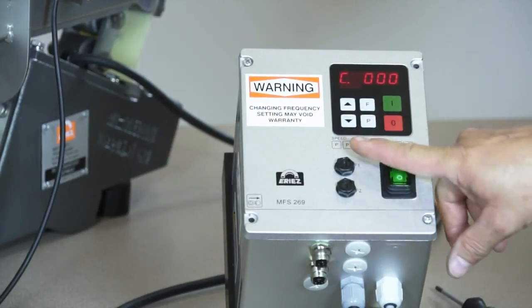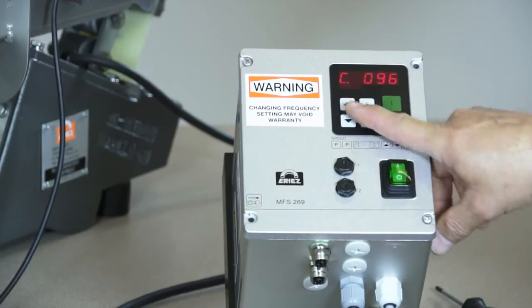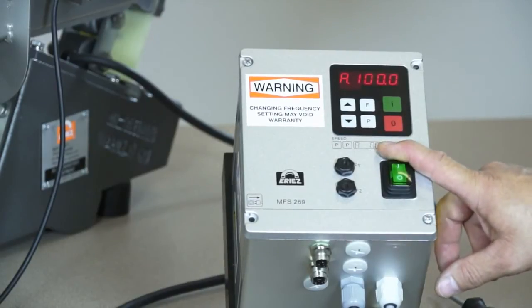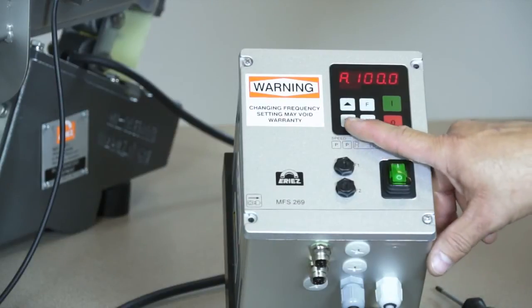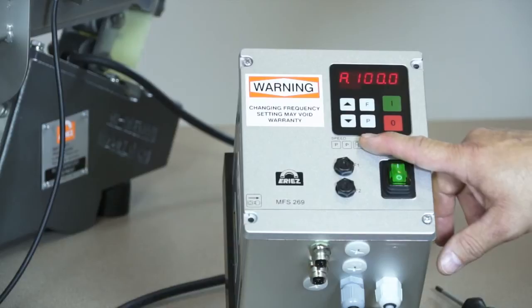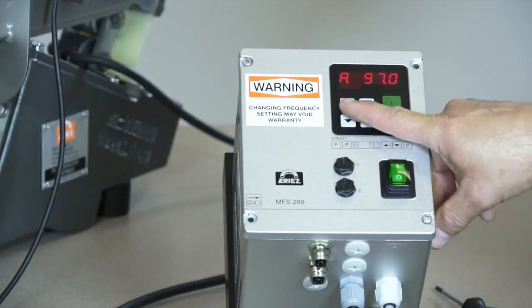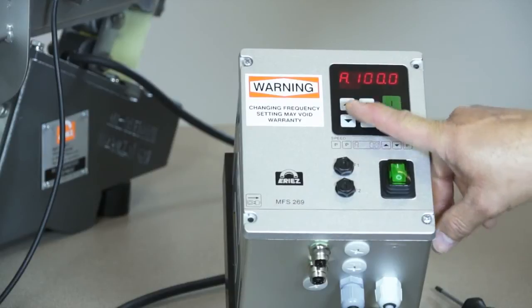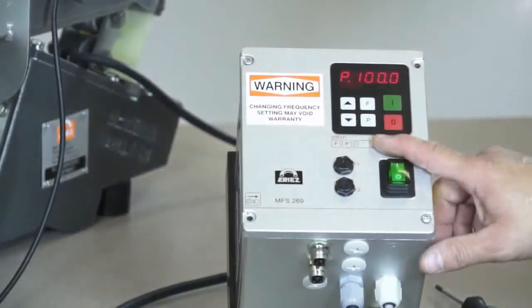Pressing the P button takes us to the parameter code group. Use the up arrow to increase code to 096 and press P to access the feeder settings. The first parameter, A.100.0, is the feeder amplitude as a percentage from 0 to 100%. Use the arrow buttons to adjust the amplitude to the desired level.